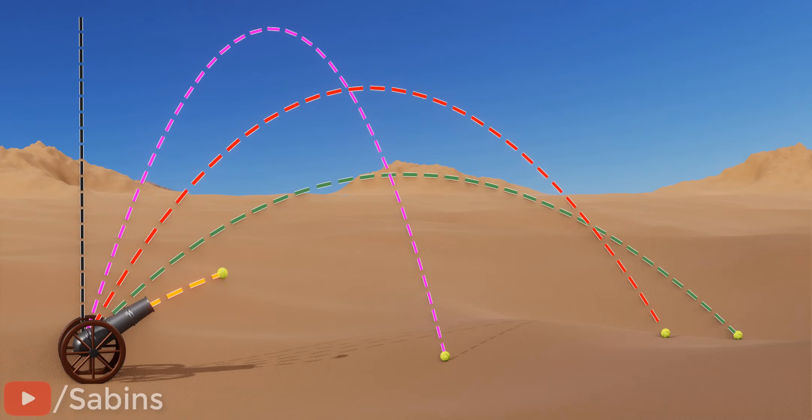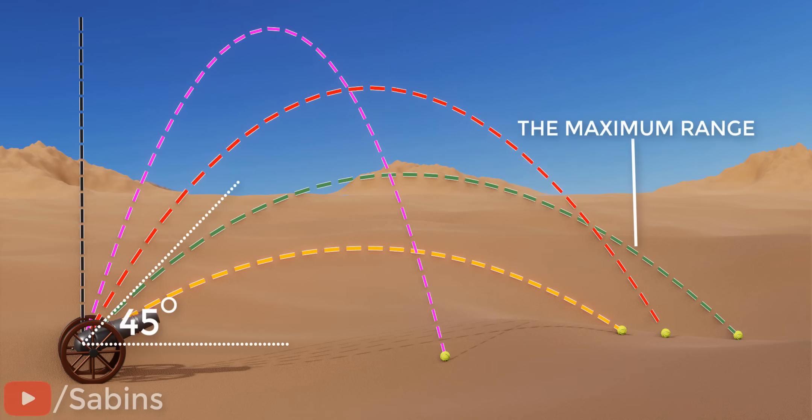The range actually decreases. The maximum range is at an angle of 45 degrees. Before and after that, the range decreases. Can you guess the reason behind this?